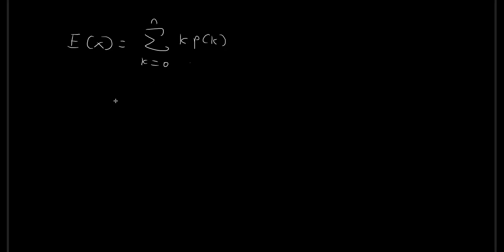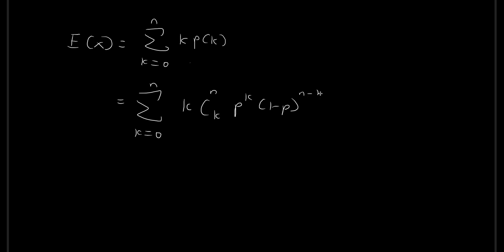Continuing with this, we want to evaluate this expression to derive the expected value. So I'm going to write the probability of having k successes in its full form: n choose k, times p to the power of k, times 1 minus p to the power of n minus k. Now first of all, for the first step in our summation where k equals 0, this entire term is equal to 0, because we have k multiplied by a positive number. So we might as well write k is equal to 1.